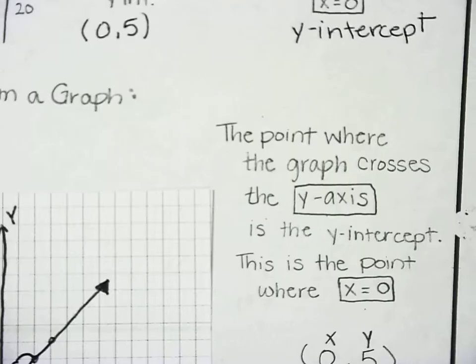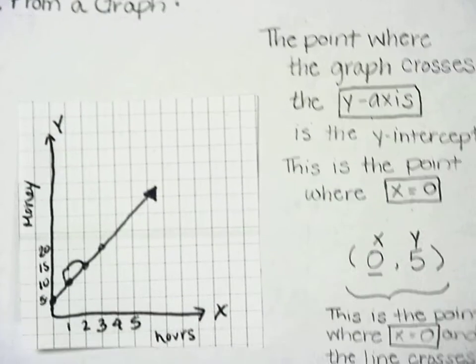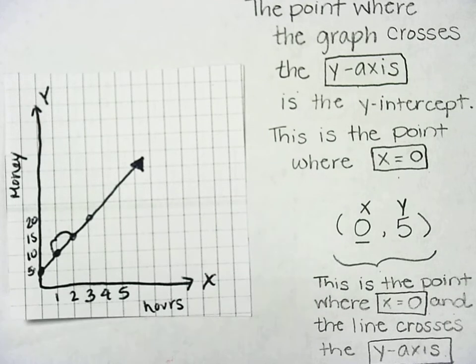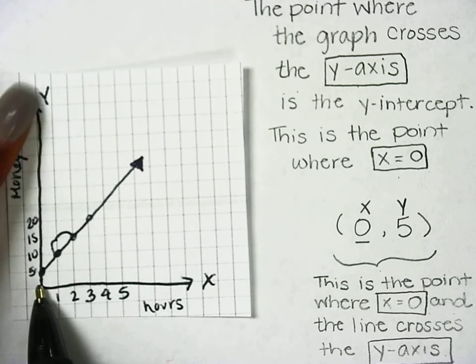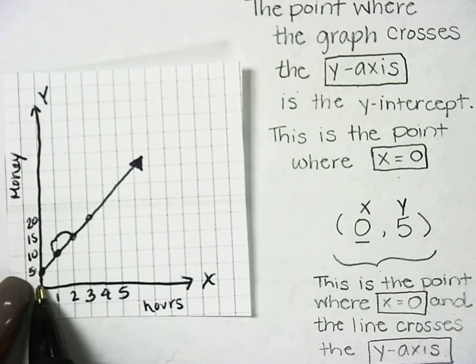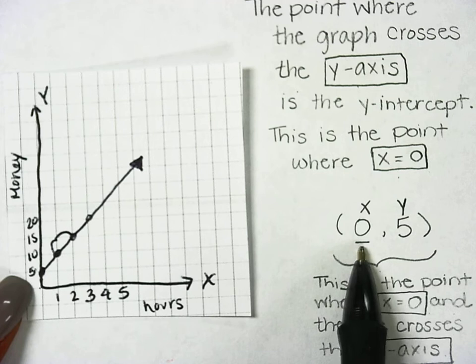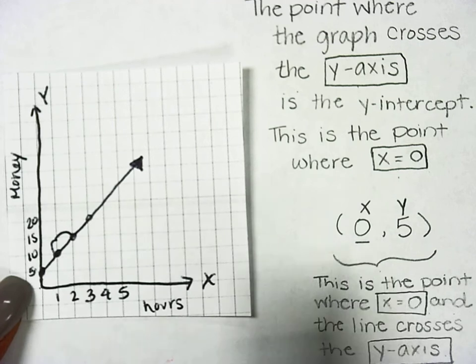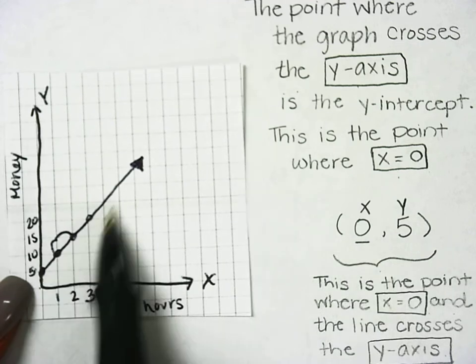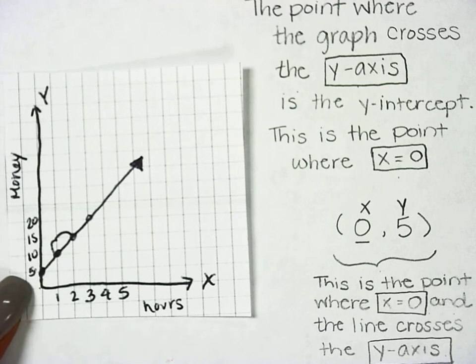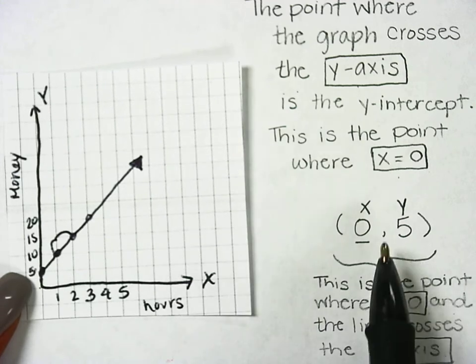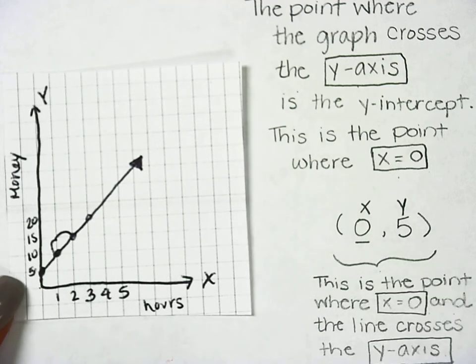When we cross the y-axis, the one that goes up and down, this line crosses at the point (0, 5). We notice that at this point, x is equal to zero. This is also the point where that line crosses the y-axis. So I know that the point (0, 5) is my y-intercept.